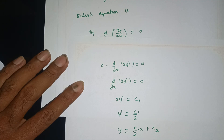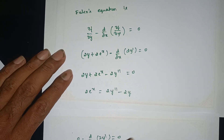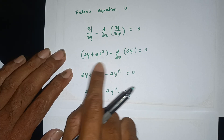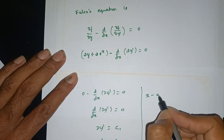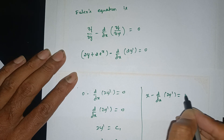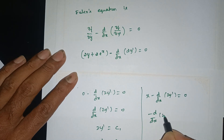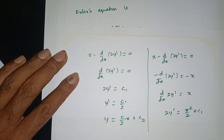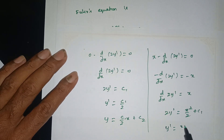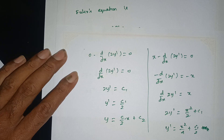Integrating y' = (λ/2)x² + C₁ again with respect to x: y = (λ/2) · (x³/3) + C₁x + C₂, which simplifies to y = (λx³)/6 + C₁x + C₂. This is equation 1.